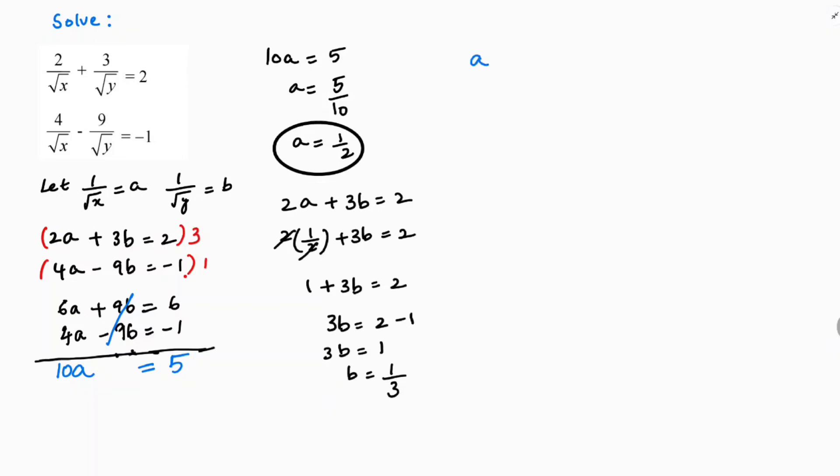The value of b is 1 by 3. So see, now here a is 1 by 2, b is 1 by 3. But we considered a as 1 by root x. 1 by root x is 1 by 2, so root x equals 2 if we cross multiply. Here also root y equals 3, or if we invert it's also fine. Instead of cross multiplication, just you can write reciprocal.